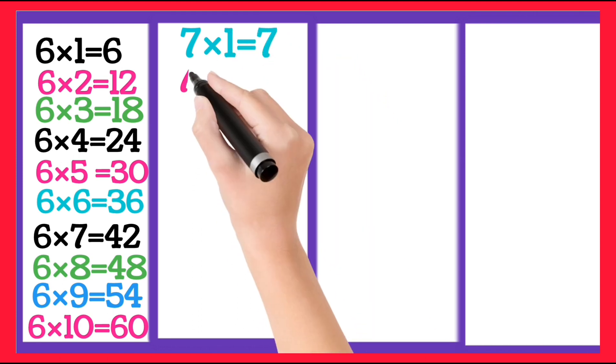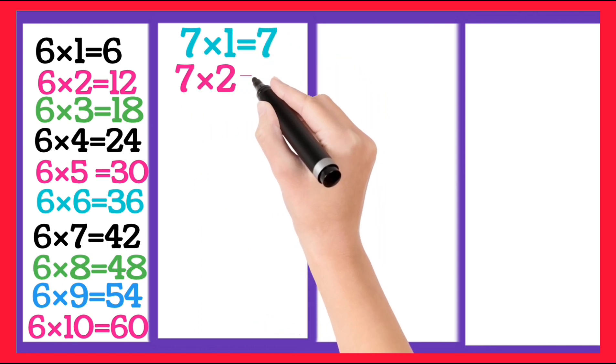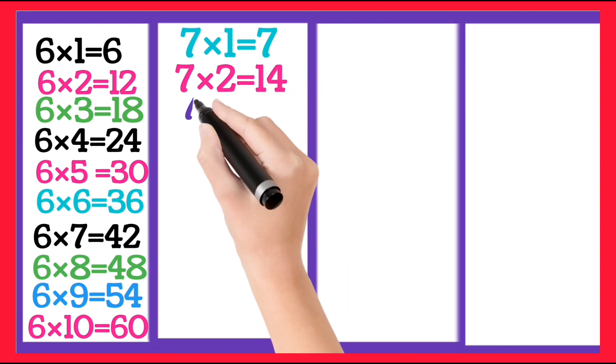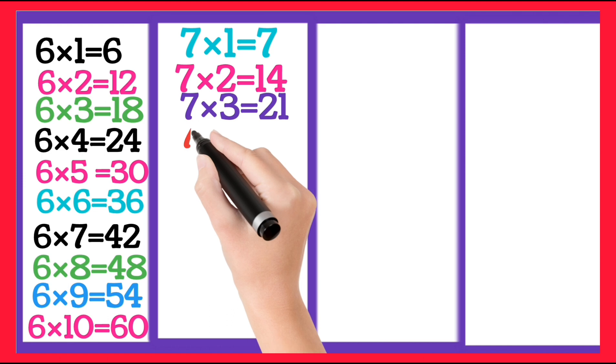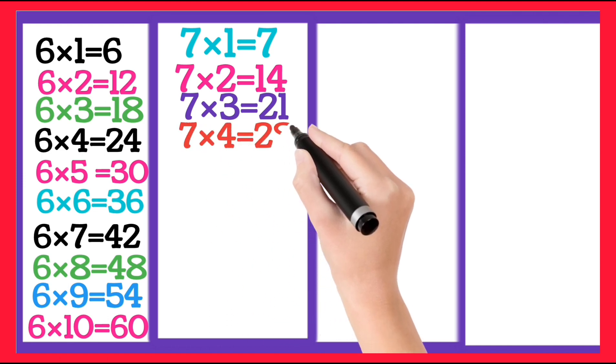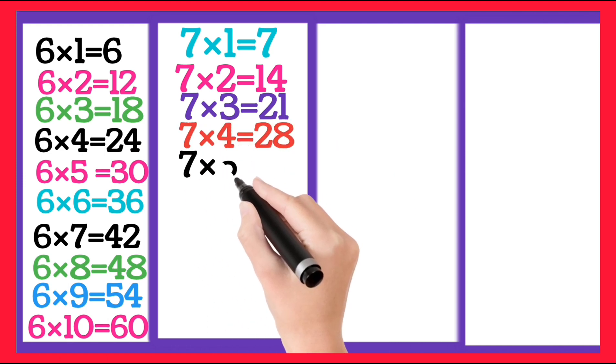7 1's are 7, 7 2's are 14, 7 3's are 21, 7 4's are 28.